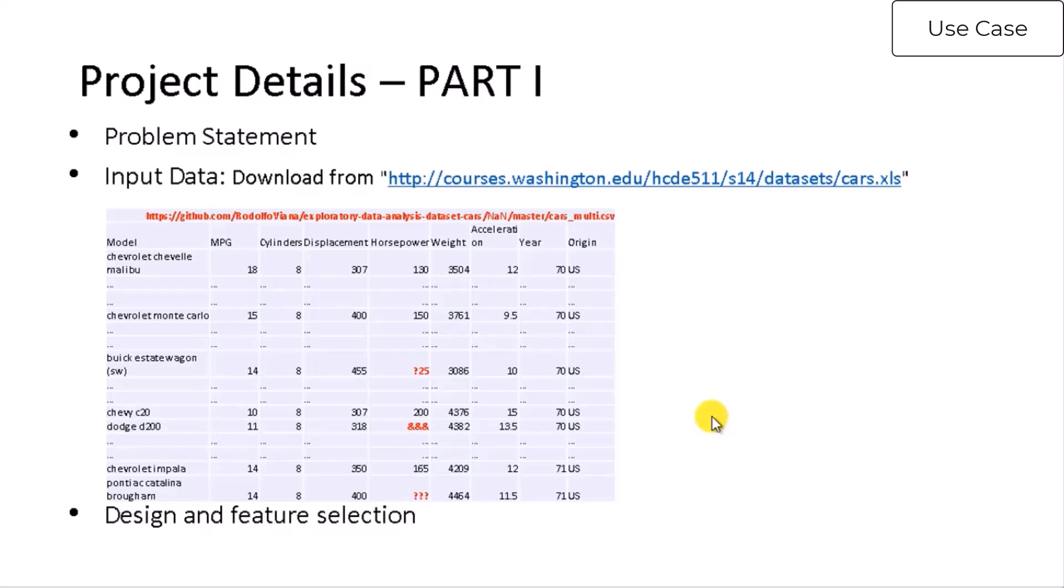So problem statement. First comes the problem statement of the project. We define it as to predict the mileage of a car given the past data of various parameters that potentially could influence the mileage.